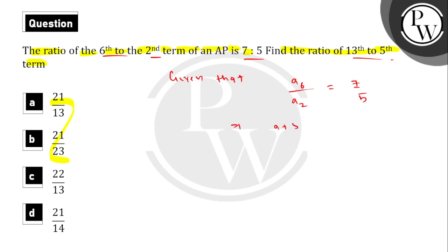A6 would be a plus 5d and A2 would be a plus d, equal to 7 upon 5. Cross multiply: 5a plus 25d equals 7a plus 7d.